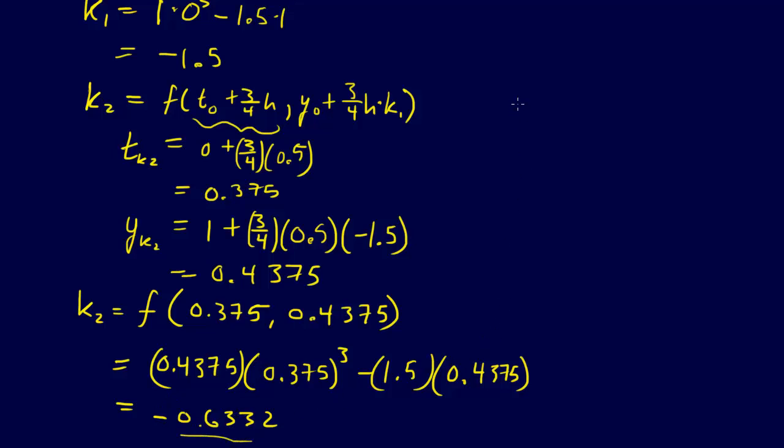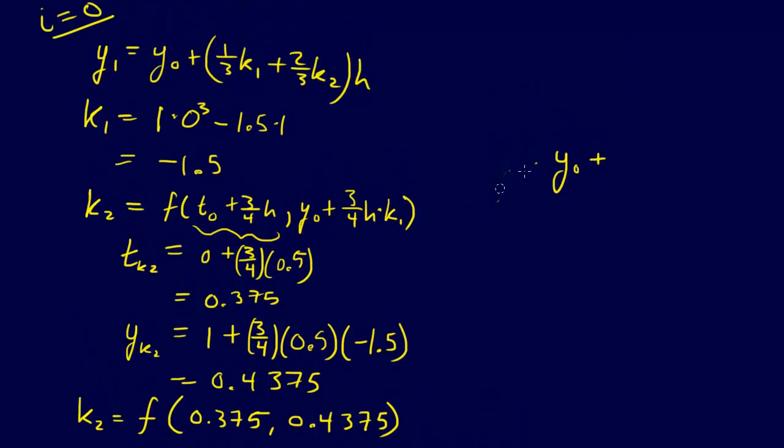And then, we get our Y_1, so Y_1 is equal to Y_0 plus, well, I've already written it out a bunch of times here, let's just go up a little bit, see there it is, it's right there, so Y_0 plus that, so that's just going to equal, Y_0 is 1, plus 1/3 times K_1, which is minus 1.5, plus 2/3.